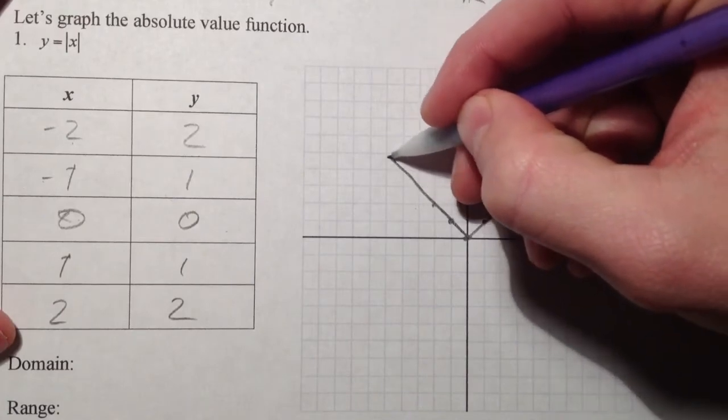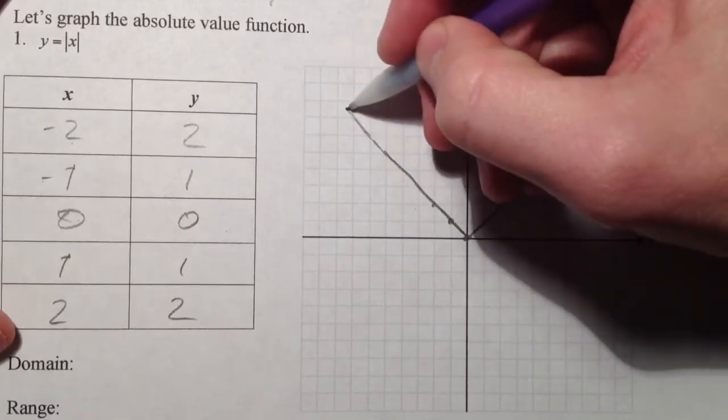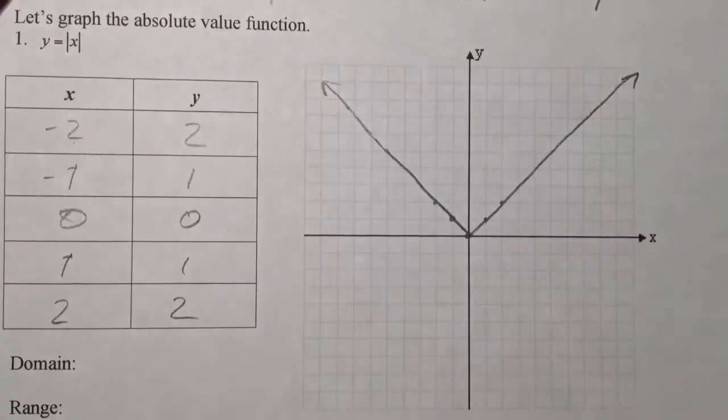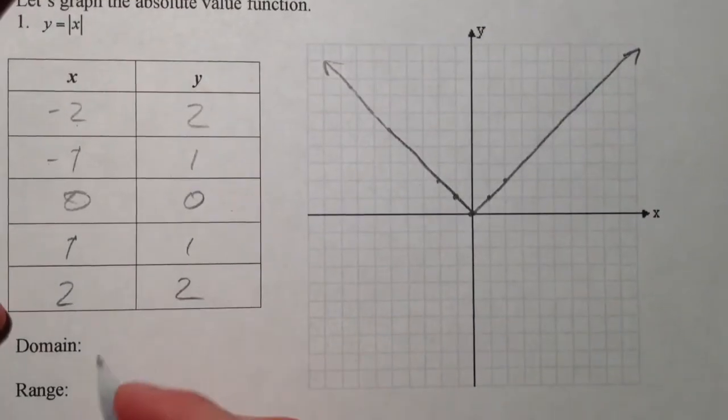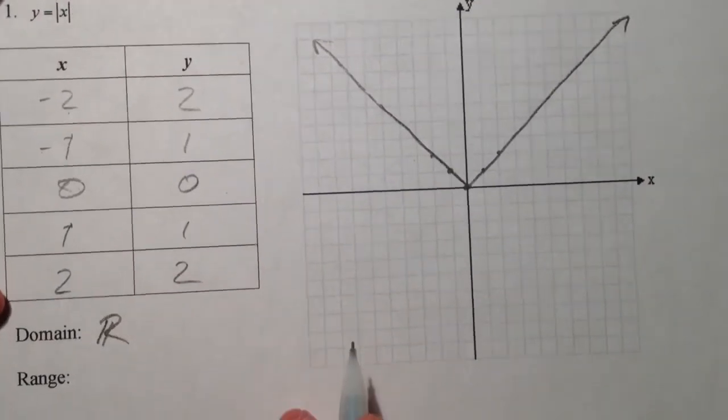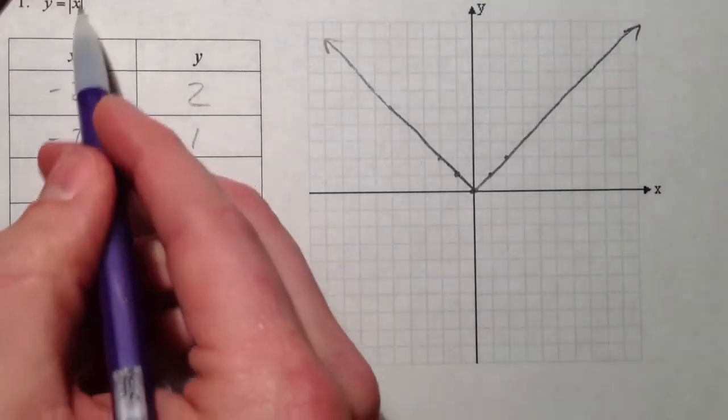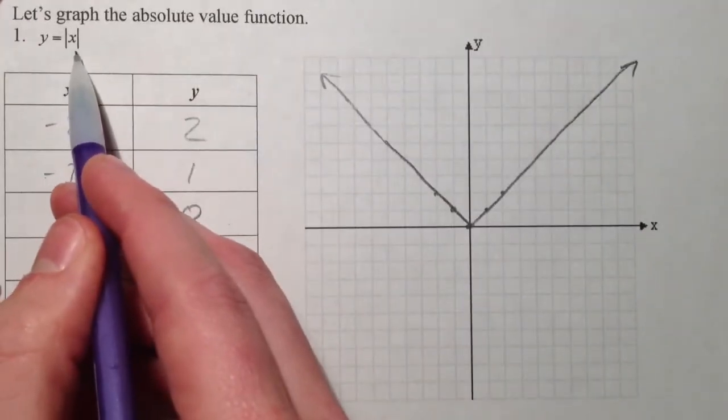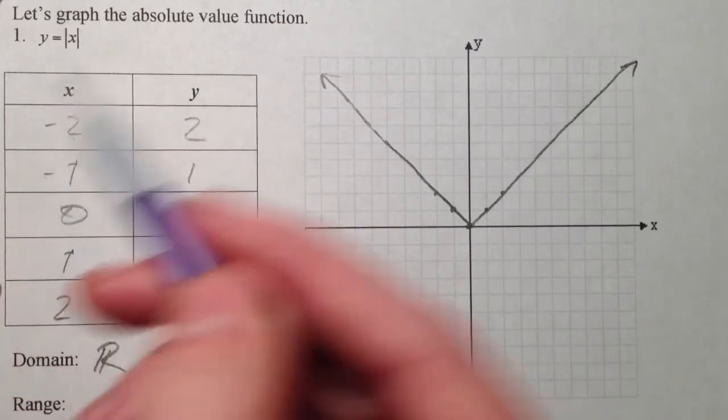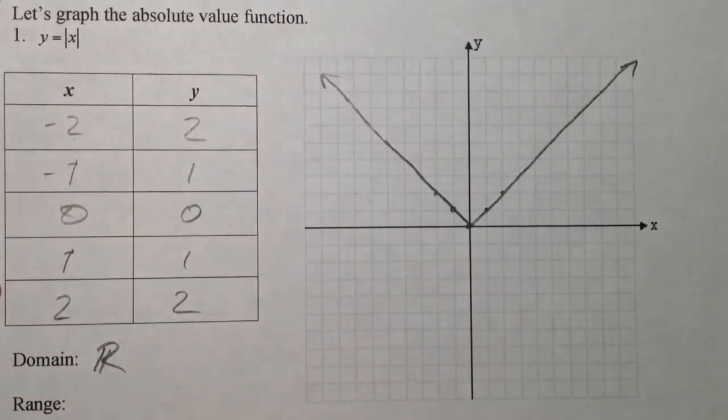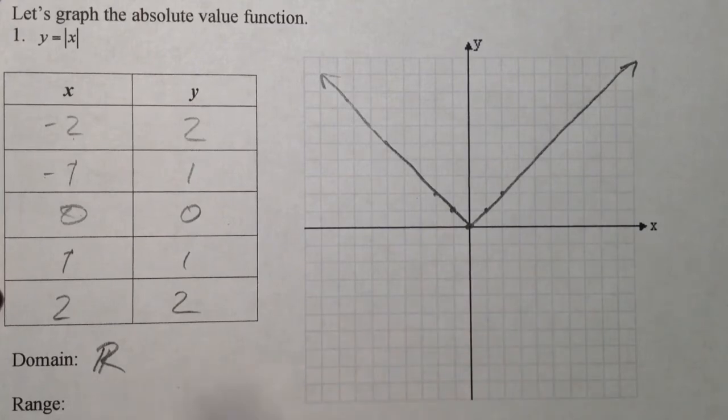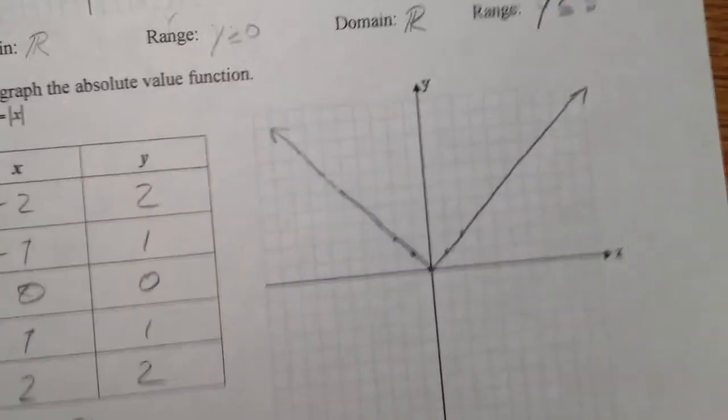So, that's what the absolute value graph looks like. And again, we don't want to plot points every single time. So domain, we can take the absolute value of x, take the absolute value of any number we want to, so the domain is all real numbers. The range, because it's distance from 0, is not negative. And so, y is greater than or equal to 0.